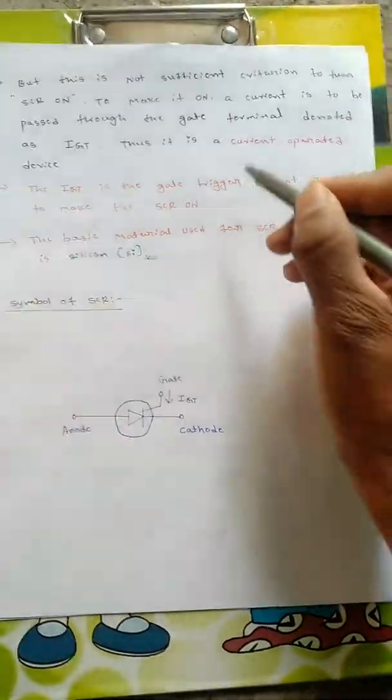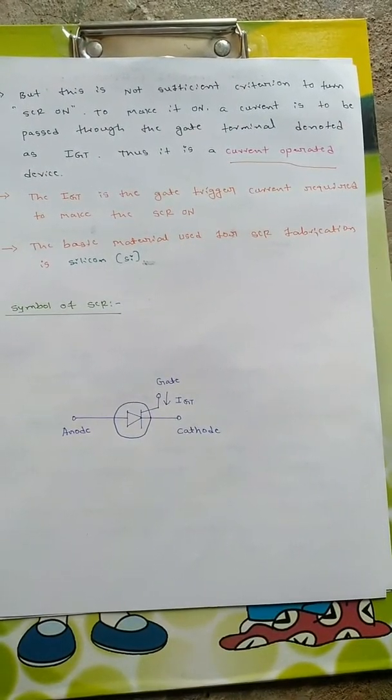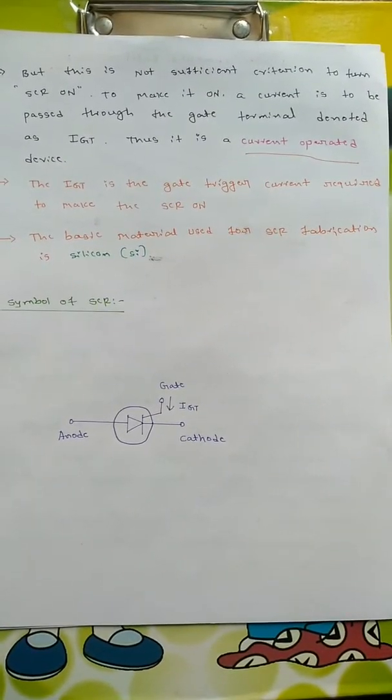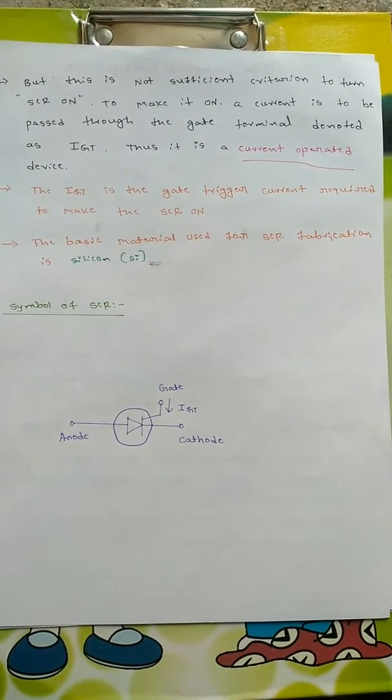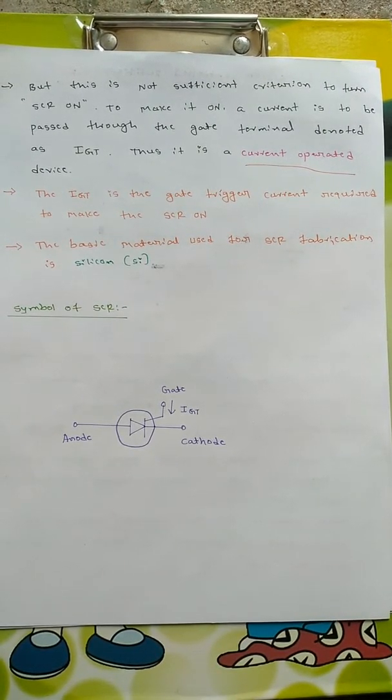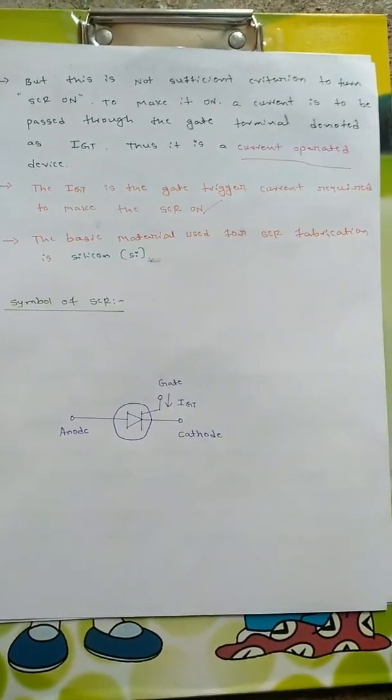It is called a current operated device or current controlled device. The IG, the gate current, is the gate triggering current required to make the SCR on. This is the gate triggering current which will make the SCR on.